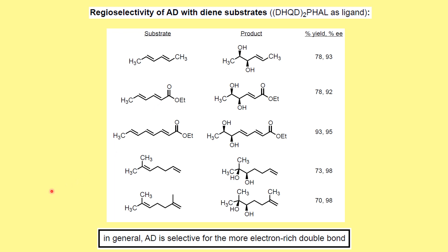An important principle: dihydroxylation is always preferred on the more electron-rich double bond, giving regioselectivity. When DHQ-PHAL is used, the diol forms from the beta face. For example, if one double bond is in direct conjugation with an ester (electron-poor) while another is isolated or trisubstituted (electron-rich), dihydroxylation preferentially occurs at the electron-rich position — giving 92% ee. A terminal double bond with two methyl groups is more electron-rich than one conjugated with an ester. Trisubstituted double bonds are more reactive than disubstituted ones. This regioselectivity table is very important and exam-relevant.